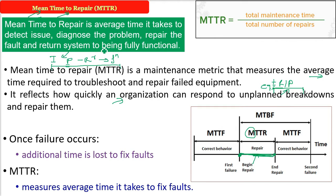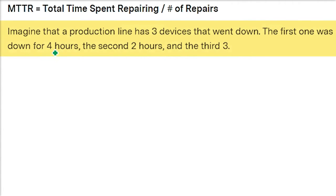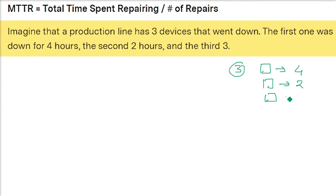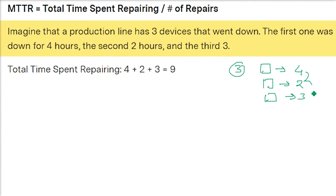MTTR example: MTTR equals total time spent repairing divided by the number of repairs. Imagine a production line with three devices that went down. The first was down for 4 hours, the second for 2 hours, and the third for 3 hours. Total time: 4 + 2 + 3 = 9 hours. Number of devices: 3. Divide 9 by 3 — MTTR is 3 hours.